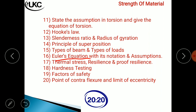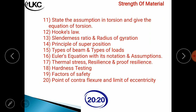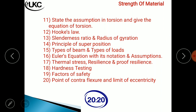Euler's equation: P = π²EI / Le², where P is the critical load, E is the modulus of elasticity, I is the moment of inertia, and Le is the effective length. You need to explain the notation and also state the assumptions made in Euler's equation.